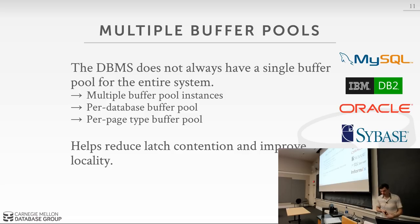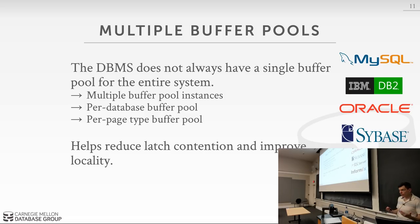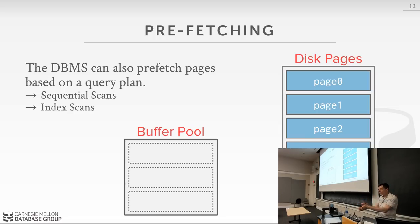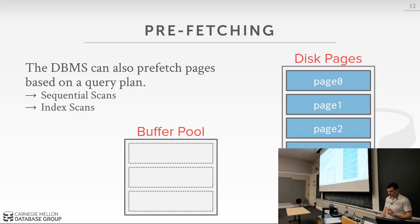Another optimization the OS can't always do correctly is prefetching. The OS can't do this well because it doesn't understand what's inside the pages. Prefetching means knowing you're going to read subsequent pages given what your query is trying to do, rather than waiting for a page fault. Instead, you start prefetching pages ahead of time because you know your query will need them.